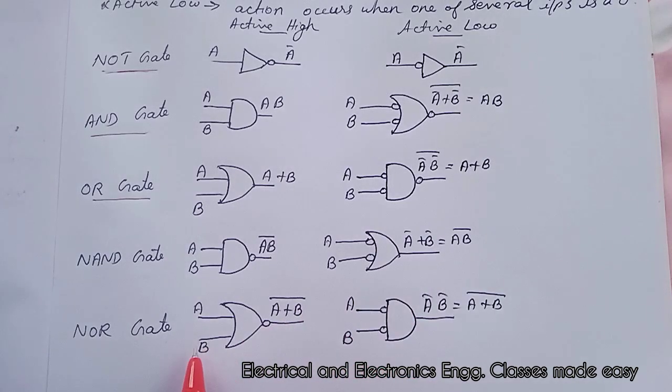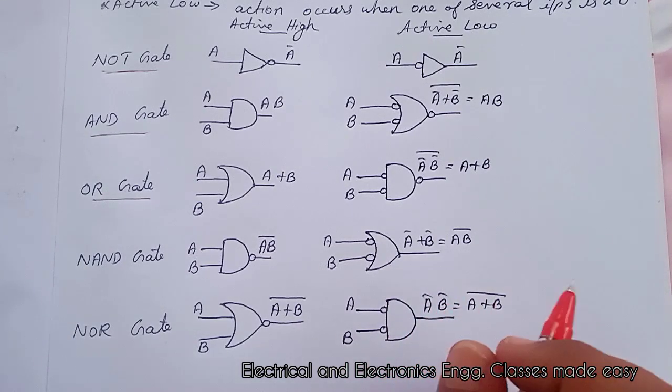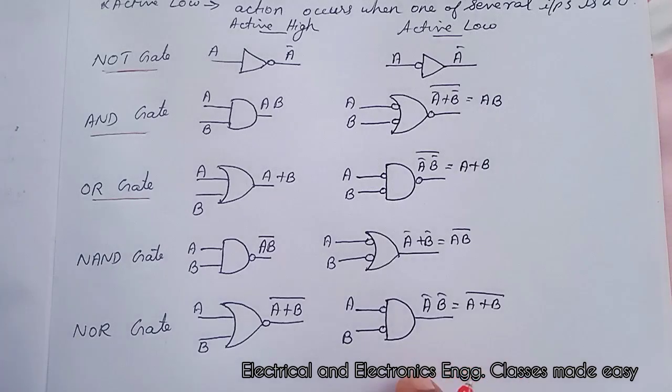And this is NOR gate. That is active high NOR gate. This is active low NOR gate which is equal to bubbled AND gate, or it is also called active low input AND gate.